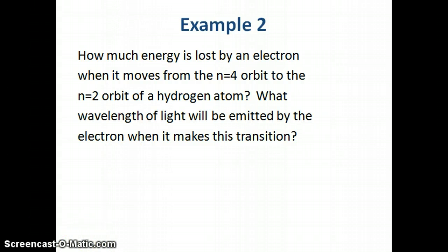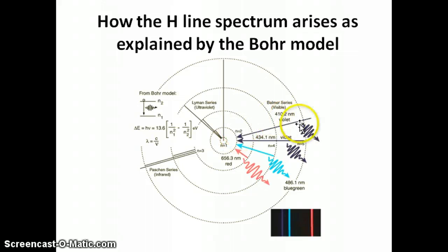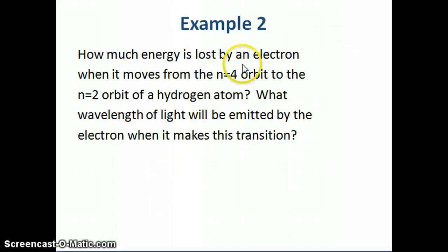As a reminder, when you get an electron to go from a higher to a lower orbit, that's when we see a release of energy by the electron, and that energy is released in the form of a photon. So the question is asking us to calculate the energy that the electron loses going from four to two.